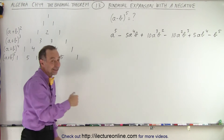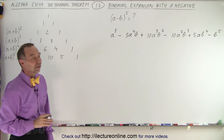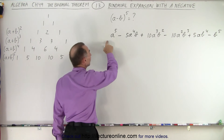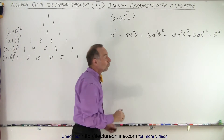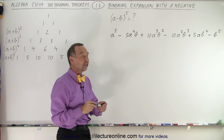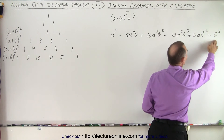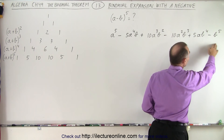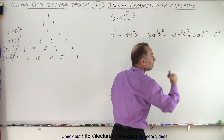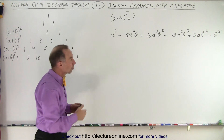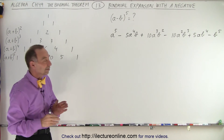So a minus b to the sixth, a minus b to the seventh will work exactly the same. You start with a positive in the front and then you get negative, positive, negative. When there's an additional term the last one will be plus b to the sixth, minus b to the seventh, plus b to the eighth and so forth when we have these greater expansions with larger exponents. But the methodology is exactly the same.